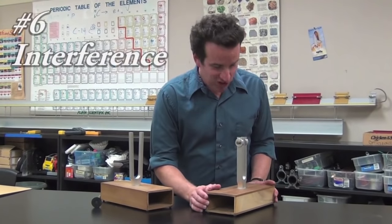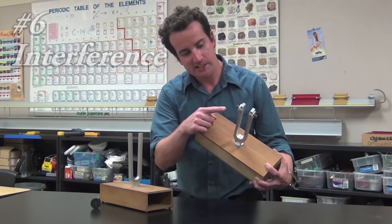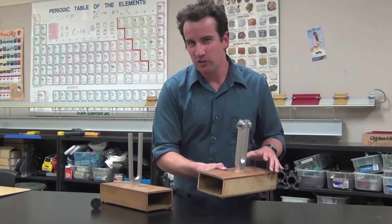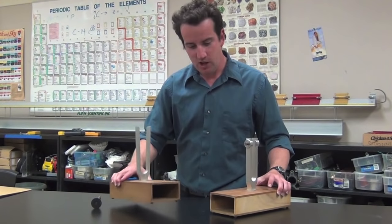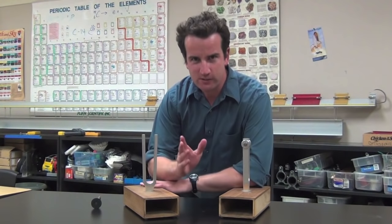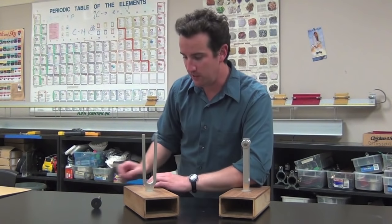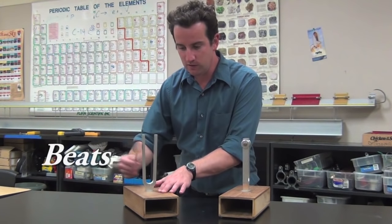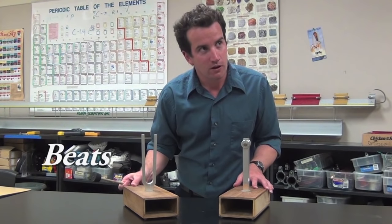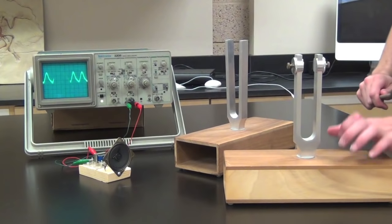These two tuning forks are not in agreement. This one has a little extra ballast which lowers the frequency slightly. When I sound them together, the sounds will interfere rhythmically, both constructively and destructively. That's called beats. You can see it on an oscilloscope.